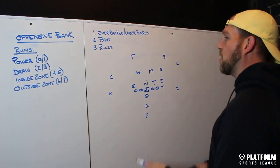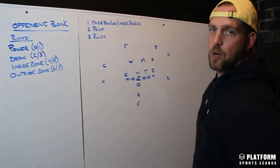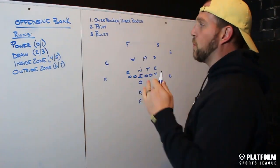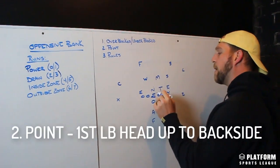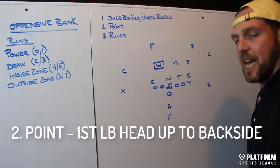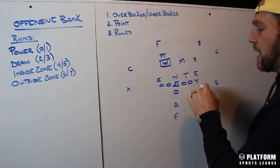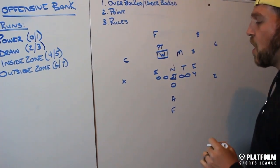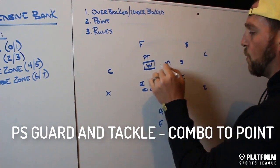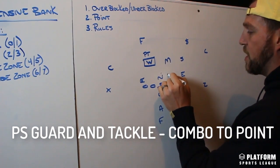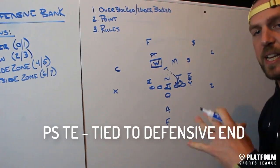With power — calling 20, running to the right — the point is going to be on the backside left, so this play is an under-blocked play. The center breaks the huddle, identifies the point head-up to backside, and that first linebacker he sees is the point. The frontside tackle and guard know they are gap blocking, taking care of whoever is in their way. There'll be a double team on the three-technique, and the guard works to come off toward the point. The tight end is always tied to the defensive end.